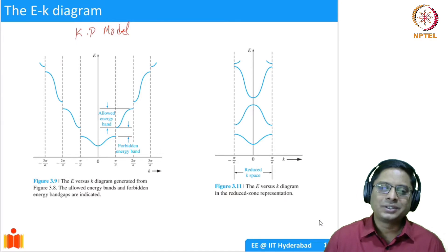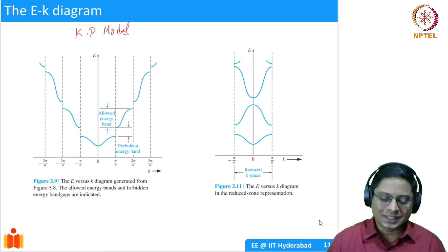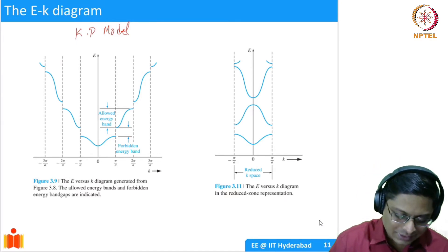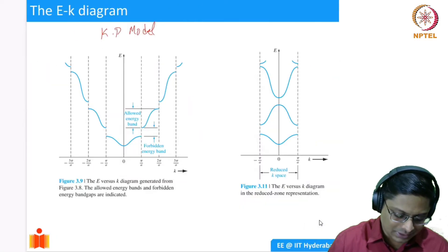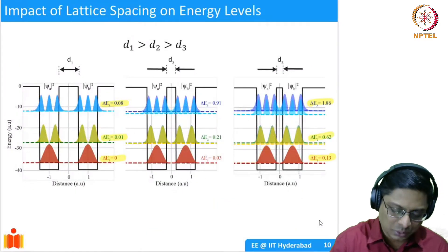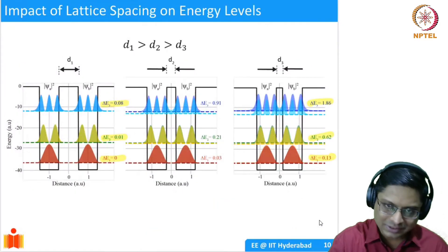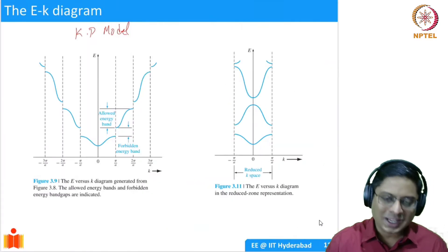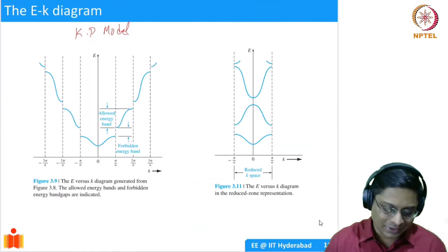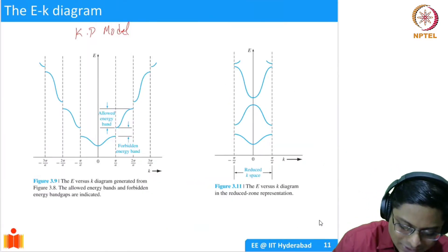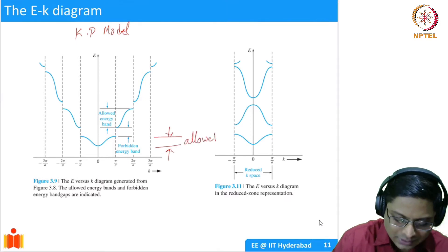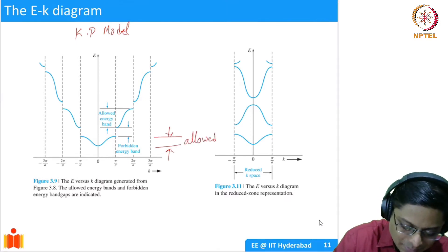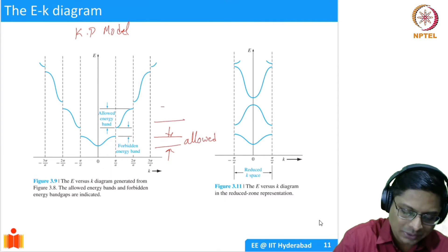And if you solve it, you will start seeing that in the previous case, corresponding to each level you had two levels — the delta E was there. Now if you have n levels, what you will start seeing is you will have n levels which are allowed. Again there is a gap. Again there will be n levels which are allowed.